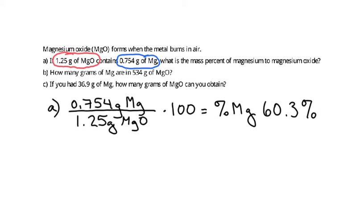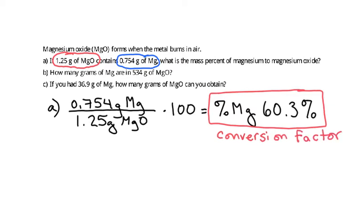How many grams of magnesium are in 534 grams of magnesium oxide? What I want to really focus on is this number here as a percent. Remember, we can use that as a conversion factor. Anything that has that per in it can be used as a conversion factor. Grams per milliliter, miles per hour, all of that is a conversion factor. This particular conversion factor, it's a percent, so it's a little bit weird.